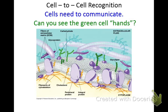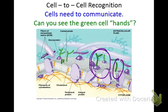Why do cells have to communicate? They have to say: 'I'm a white blood cell,' or 'I'm a red blood cell,' or 'I'm a skin cell.' These glycoproteins — a sugar attached to a protein — help with that. The green is the sugar, the purple is the protein. Glycolipids have a sugar attached to the phospholipid. Think about that carbohydrate as a flag or label identifying the type of cell, almost like a hand waving so cells can feel what type of cells are around them.